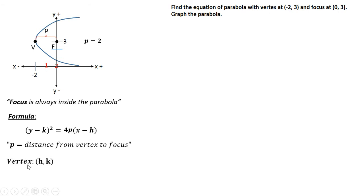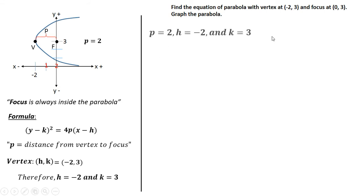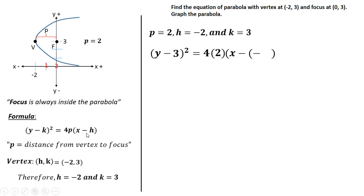h and k represent the vertex of the parabola. Since the given vertex is (-2, 3), h is negative two and k is three. Using these values, we can solve our equation of the parabola by substituting into the formula. We have (y minus k)² — k is three — equals 4p, where p is two, and (x minus h) where h is negative two.